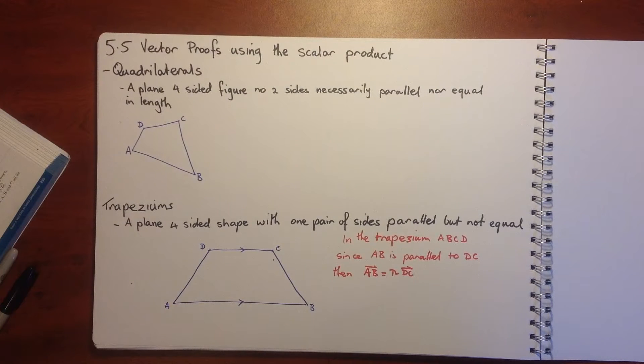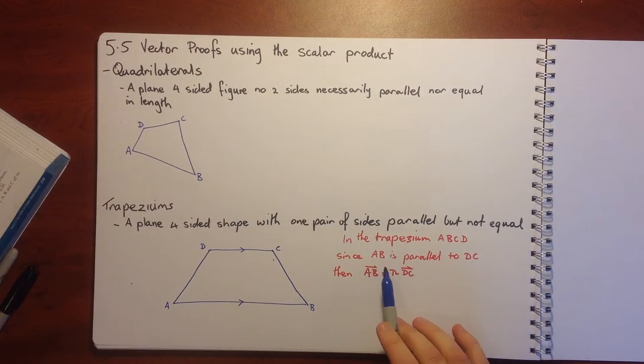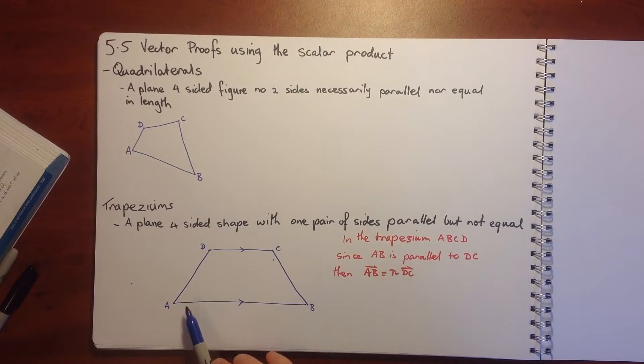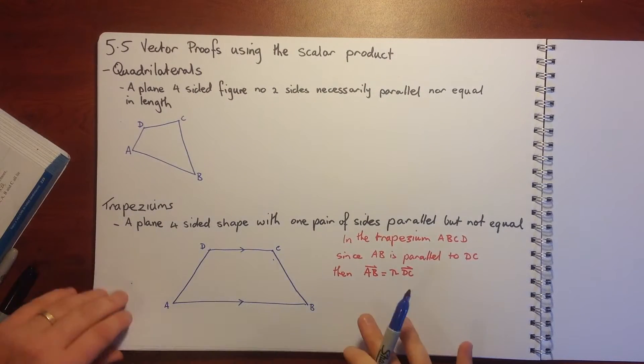For trapeziums, we've got a plane four-sided shape with one pair of sides parallel but not equal. For the trapezium ABCD, since AB is parallel to DC, then vector AB is equal to lambda DC. So it's just some constant, a scalar value lambda, that you multiply DC by to get AB.